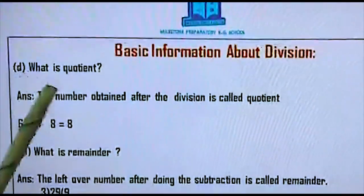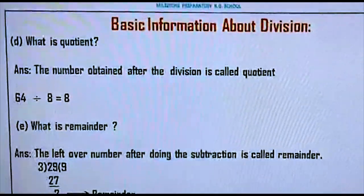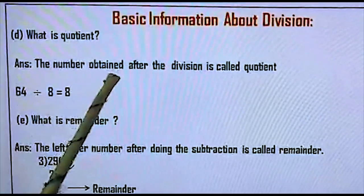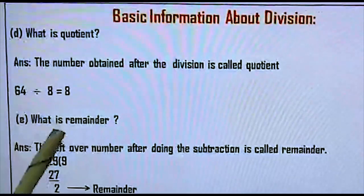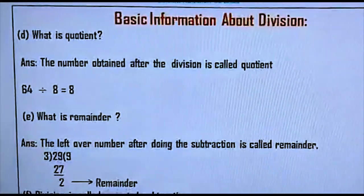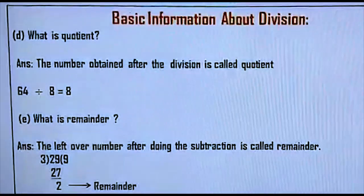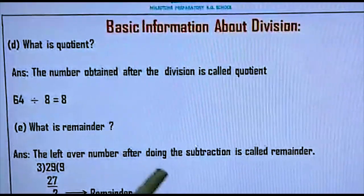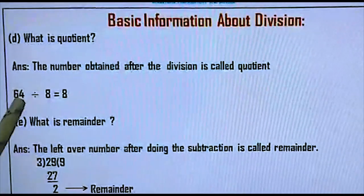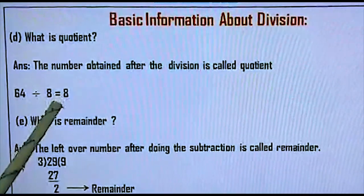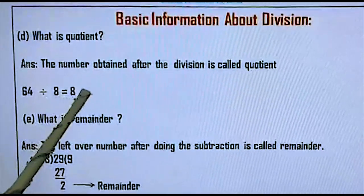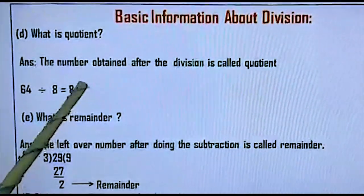What is quotient? The number obtained after the division is called quotient. You know that in subtraction the answer is called difference, in multiplication the answer is called product, and in division the result is called quotient. For example: 64 divided by 8 — if you read out the 8 times table, we get the answer 8. So here, this 8 is called the quotient.